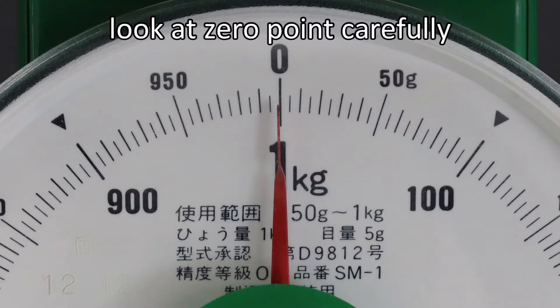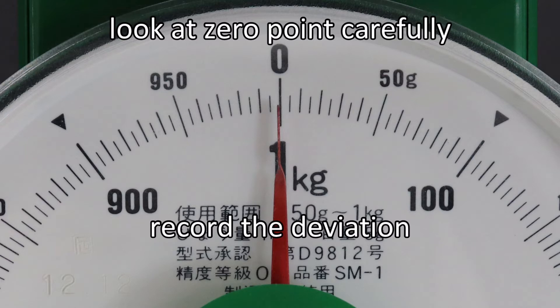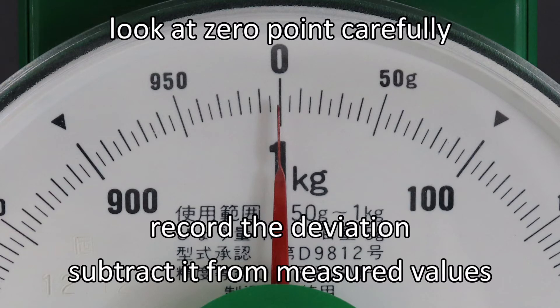However, if you look carefully, you can see that the red needle is pointing slightly away from zero, to the minus side. There is also a way to adjust the needle so that it is zero in this state. However, in this experiment, we will record the value of the scale in this state and subtract it from the measurement result. So we need to be careful when organizing the data.